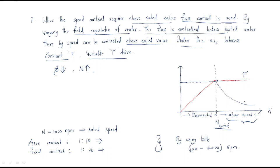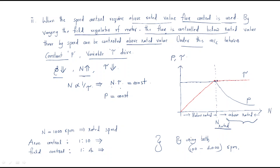Above rated speed: torque will be constant and power will decrease — that is the power-torque relationship. Flux decreases and speed increases. Torque will decrease, and we have the ratio that speed is inversely proportional to torque. So the product of speed and torque gives constant power — power becomes constant power. Therefore, above rated value control means torque is variable and power is constant.